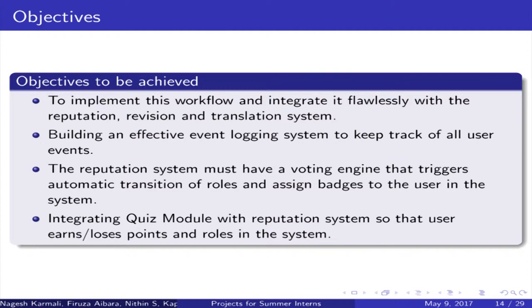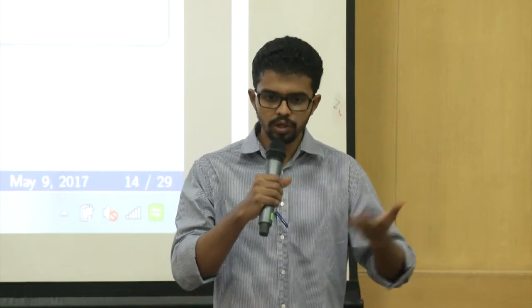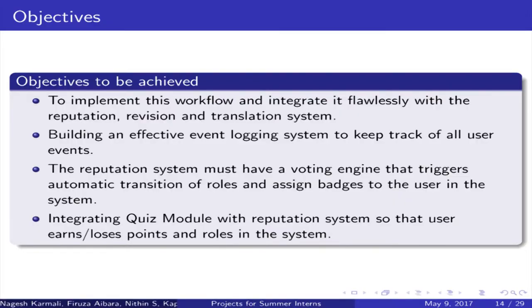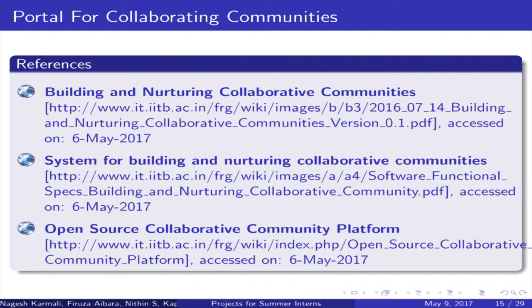Part of the objectives have already been achieved; the following are yet to be achieved. We need full integration with the content publishing workflow. We have to build an effective event logging system to keep track of all user events — every click, video watch, comment — everything a user does has to be logged. The reputation system means when a user does something positive in the community, they gain reputation, and upon reaching a particular level, they receive badges and more authority. Finally, there needs to be an integrated quiz module with the reputation system so points earned and lost are handled automatically. These are the links for Portal for Collaborating Communities.